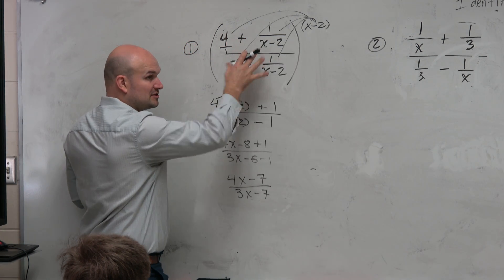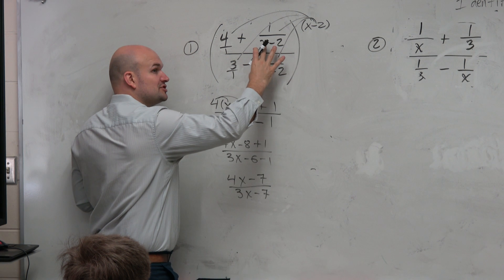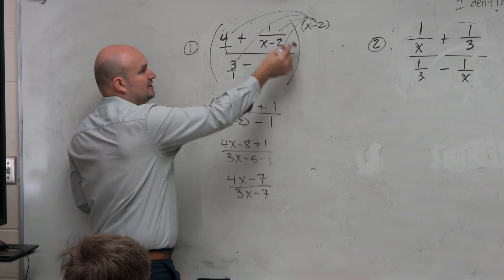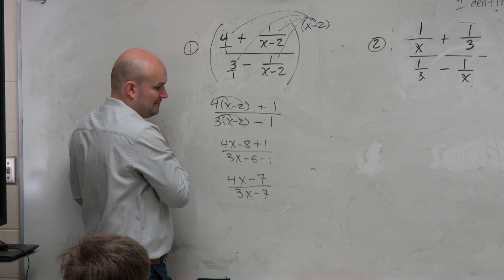So let's go back to the original problem, because we're going to want to look at the restrictions from the original problem as well as from our simplified problem. So when we look at the original problem, we realize that x cannot be a certain number.